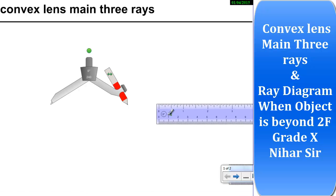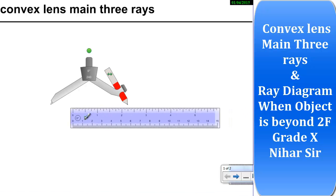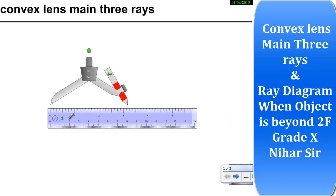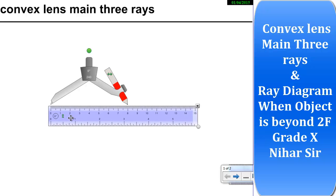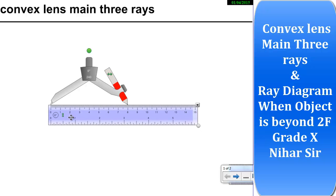Hello friends, let's understand convex lens in this video. Once we learn the three main rays — just as we understood three main rays in concave mirror and convex mirror — the same way we will understand the three main rays in convex lens. First of all we will learn to draw the convex lens and then we will solve the ray diagram.